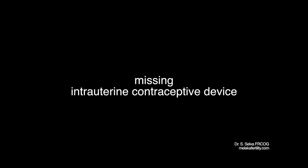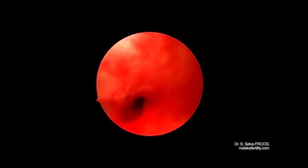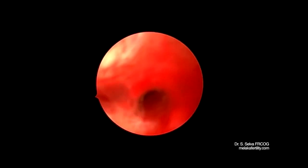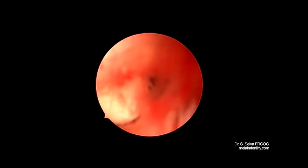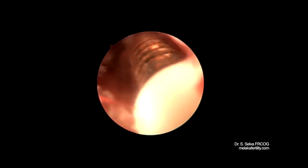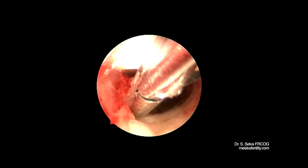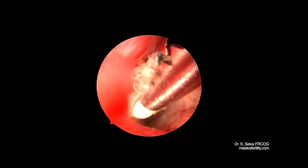Missing intrauterine contraceptive device. In this patient, the intrauterine contraceptive device thread was not seen. She underwent an office hysteroscopy. There was some difficulty negotiating the internal os. The tip of the intrauterine contraceptive device was seen at the internal os, and then seen in the uterine cavity. The thread was held and the IUCD was removed.